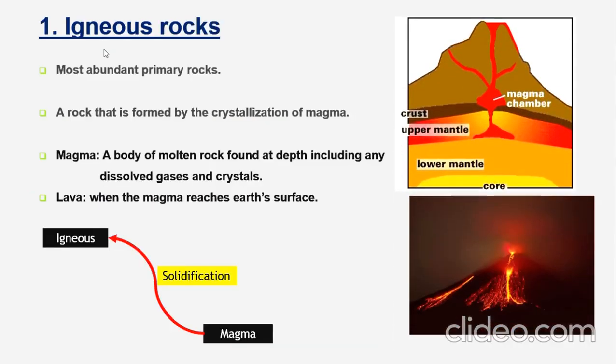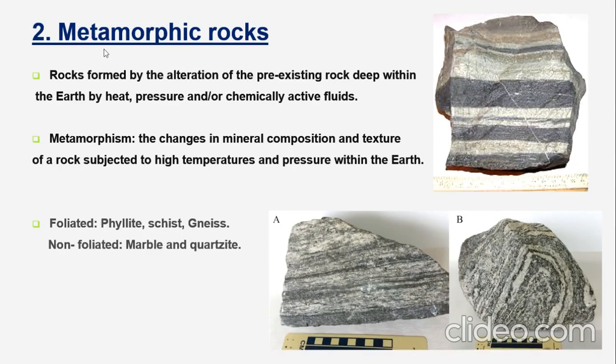Igneous rock is one of the most abundant primary rocks. Igneous rocks are formed by the solidification of magma, which is a molten rock material formed deep inside the earth. When this magma reaches the surface of the earth, we term it as lava, which we normally see during volcanic eruptions. The rock crystallized from magma within or on the surface of the earth is collectively termed igneous rock.